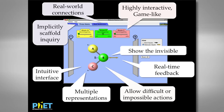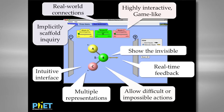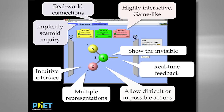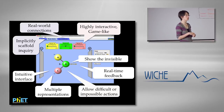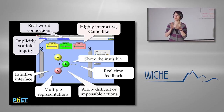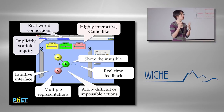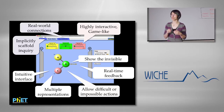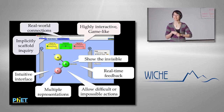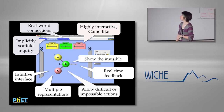One feature is showing the invisible. In a screenshot from our Molecule Polarity sim, we're showing things like the dipole arrow and partial charges, which are not visible in real life. In Color Vision, there's a mode where you can switch from a beam of light to a series of photons — also not something you can see with the naked eye. We want to show these invisible phenomena so students can make connections between those pieces.